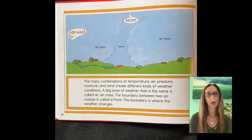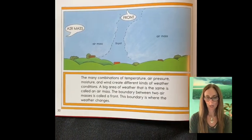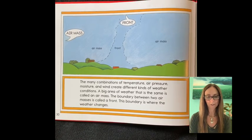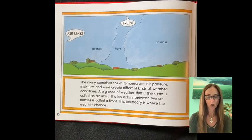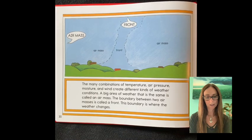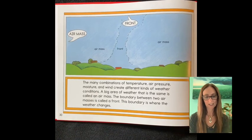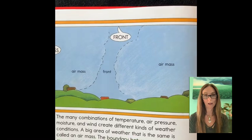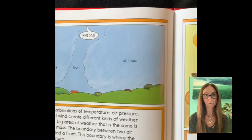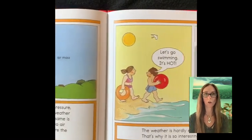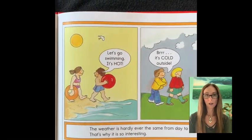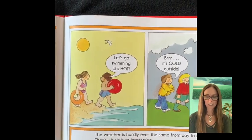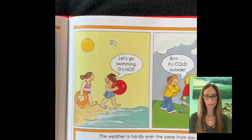The many combinations of temperature, air pressure, moisture, and wind create different kinds of weather conditions. A big area of weather that is the same is called an air mass. The boundary between two air masses is called a front. This boundary is where the weather changes. The weather is hardly ever the same from day to day. That's why it's so interesting.